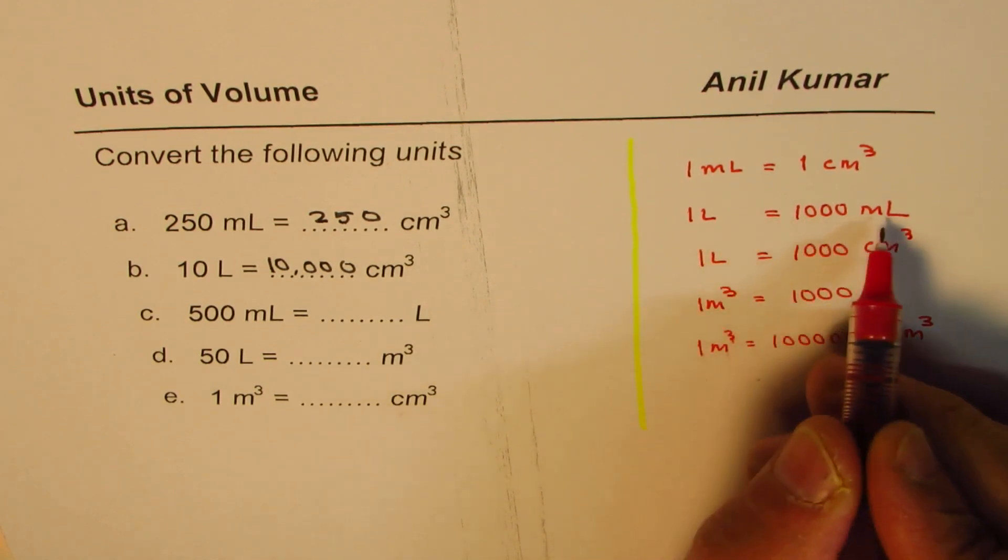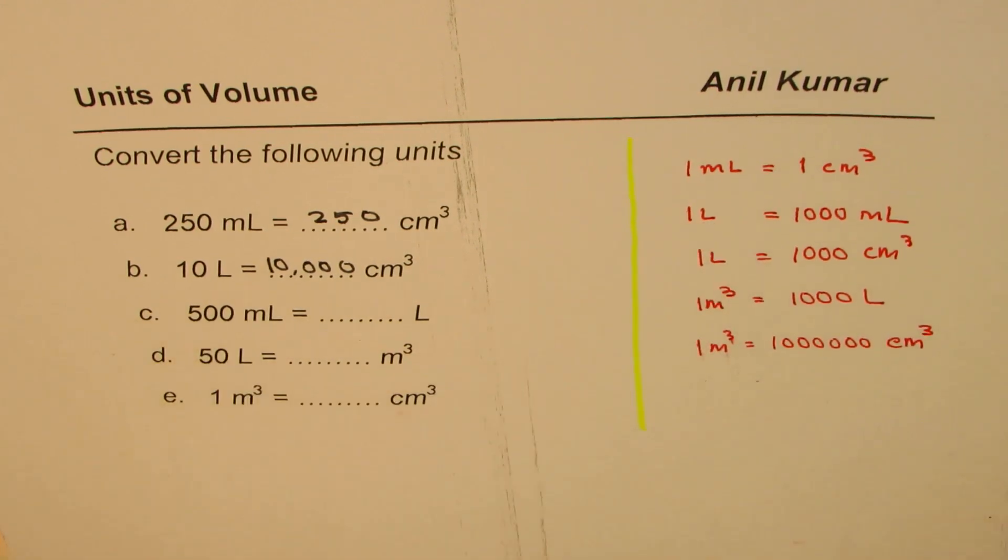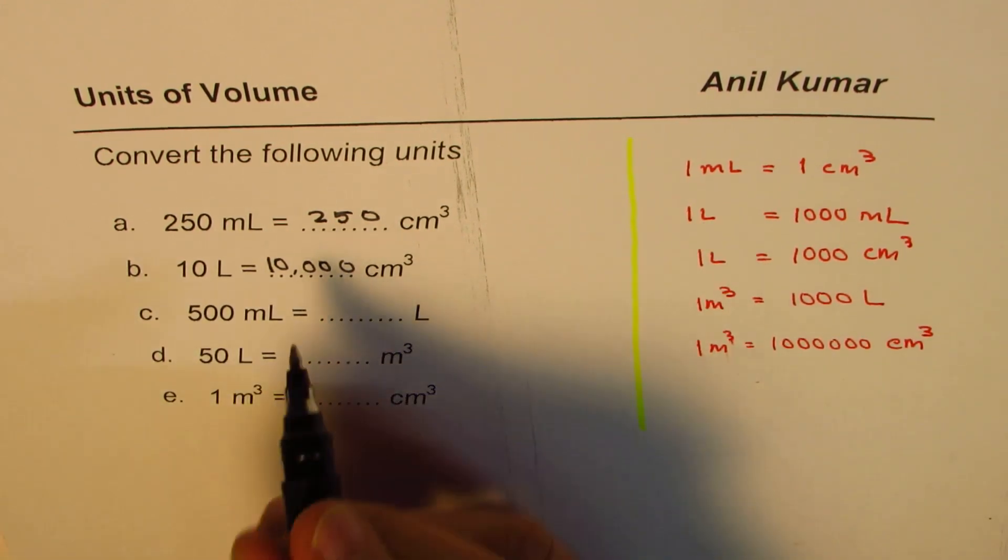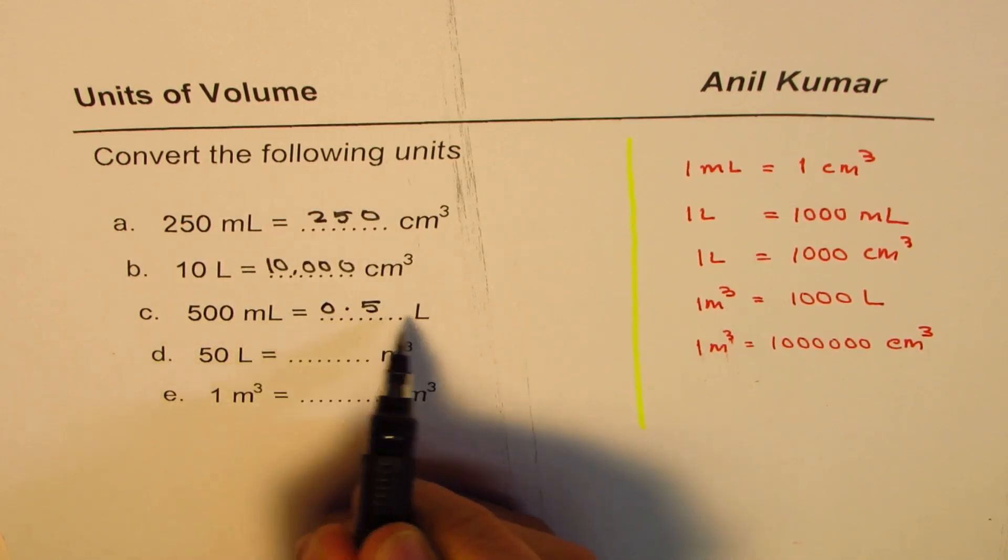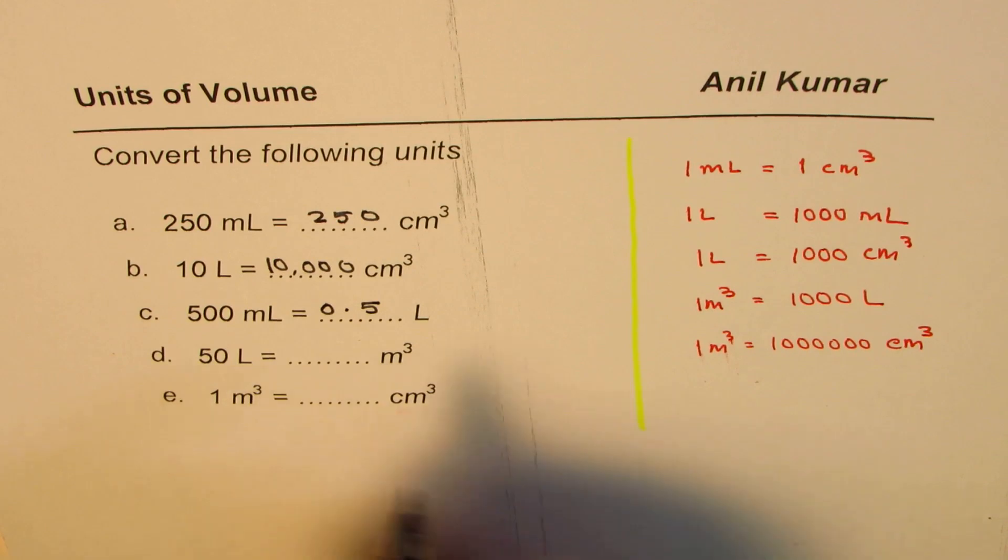We have one liter is 1000 milliliters, so one milliliter will be, you have to divide by 1000. So if you divide by 1000, what do you get? You get 0.5, right? So you get 0.5 liters.